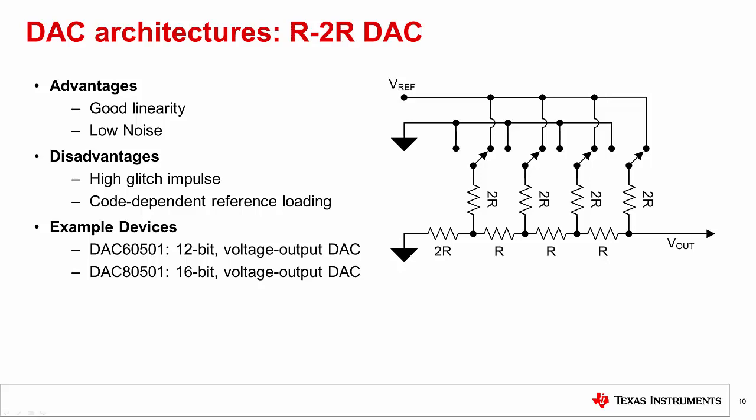If the application calls for rapid cycling between codes, there may not be time to wait while the reference settles with the new voltage. For that reason, it is highly recommended that any R2R DAC application includes a reference buffer. Some R2R DACs may have a built-in buffer to help drive the reference.